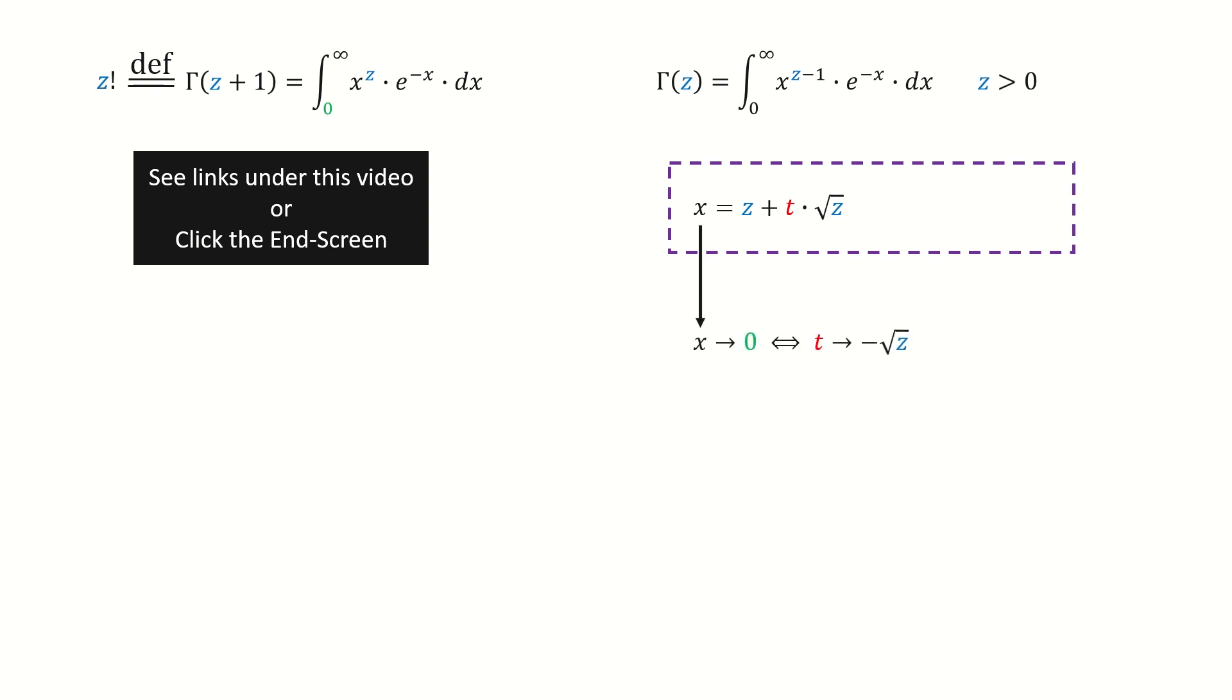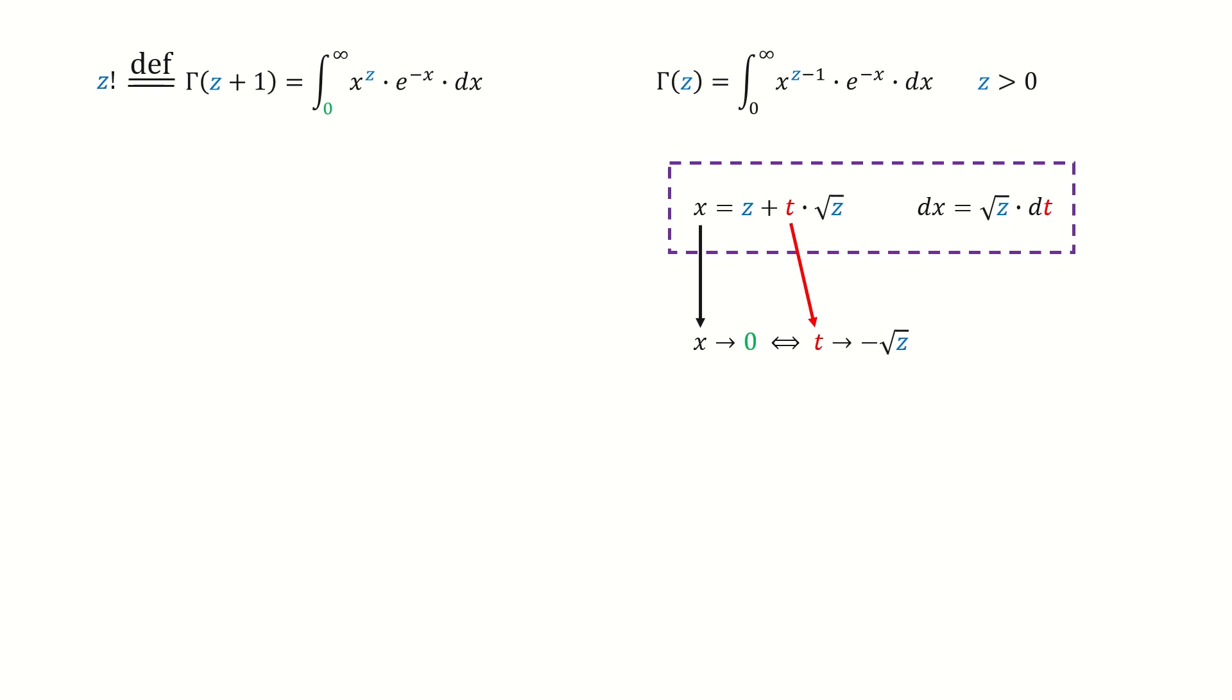When x goes to zero, t goes to minus square root z. Then we do the derivative to find dx. Plug in the substitution. The lower limit is converted here.